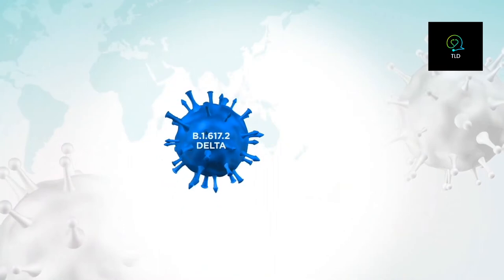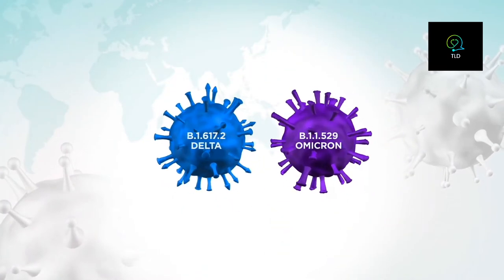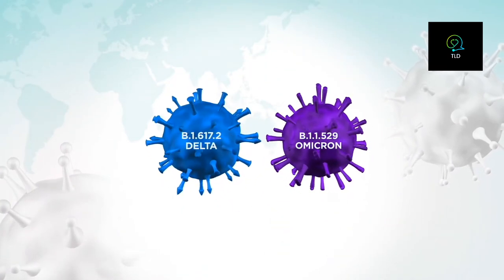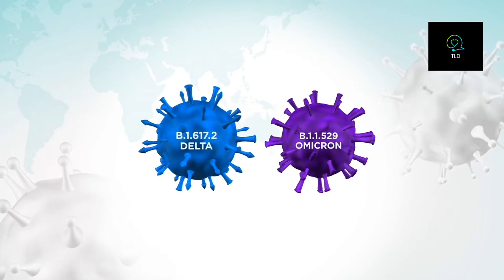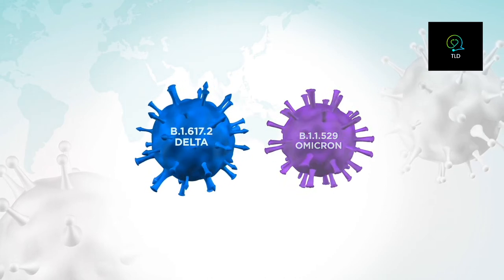Globally, in the COVID-19 pandemic, Delta and Omicron remain the two major variants of concern. But each variant also has sub-variants or sub-lineages.